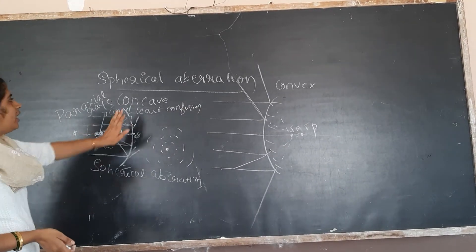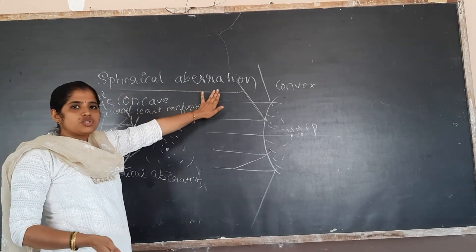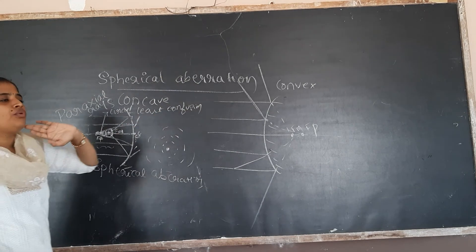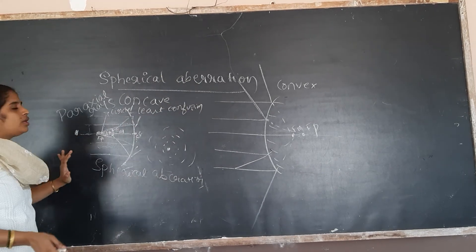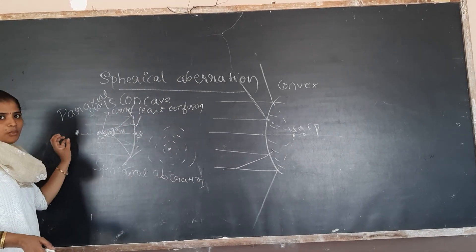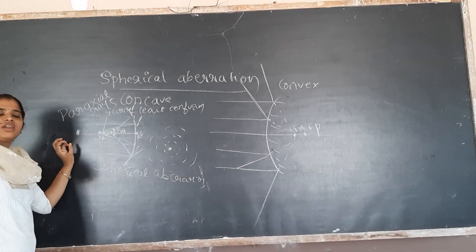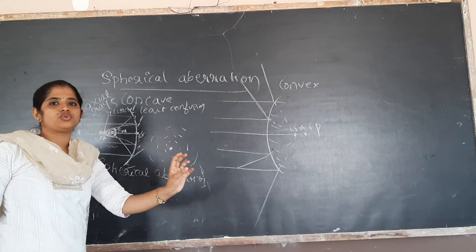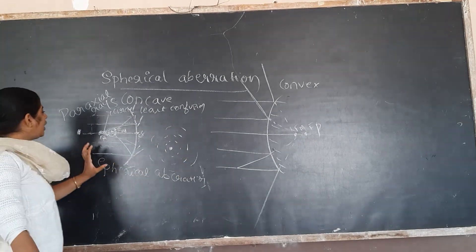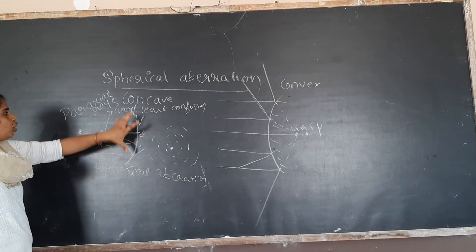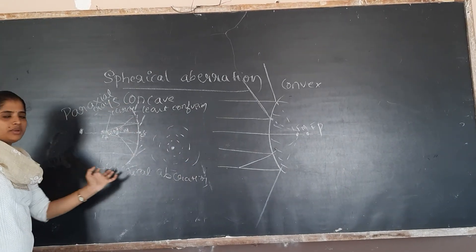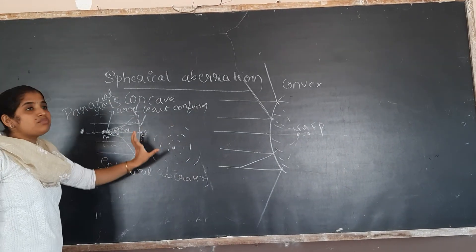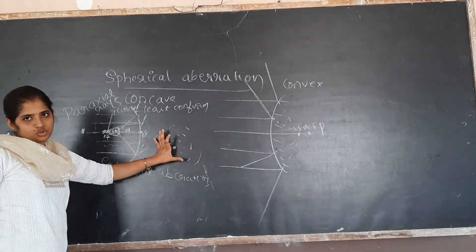So spherical aberration means: for a particular point object, we are not getting a point image. We are getting a circular shape of image — a blurred image. That is why you get a blurred image because of spherical aberration.